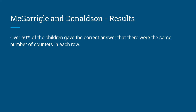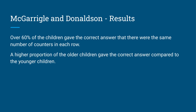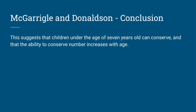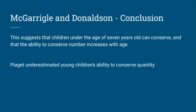The results: over 60% of the children gave the correct answer that there were the same number of counters in each row, but a higher number of the older children gave the correct answer compared to younger children. The conclusion was that it suggests children under the age of seven can conserve, and that the ability to conserve number increases with age. This contradicts Piaget's theory and shows that Piaget underestimated young children's ability to conserve quantity.